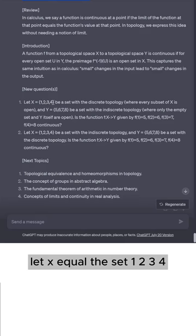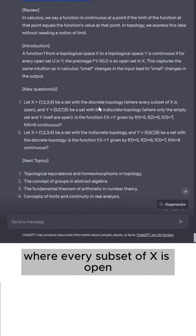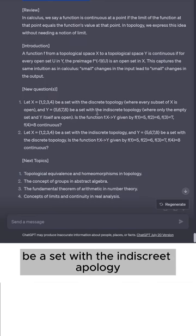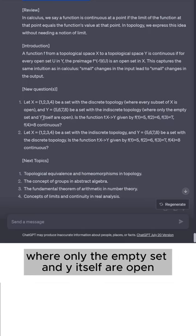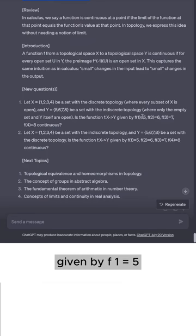Let x equal the set 1, 2, 3, 4 be a set with the discrete topology where every subset of x is open and y which equals 5, 6, 7, 8 be a set with the indiscrete topology where only the empty set and y itself are open. Is the function f from x to y given by f of 1 equals 5, f of 2 equals 6, f of 3 equals 7, f of 4 equals 8, continuous.